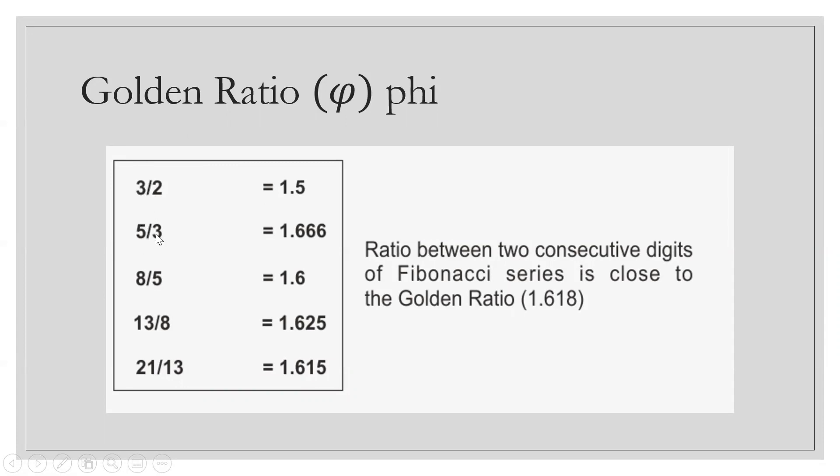The 5 is divided by 3. The 8 is divided by 5. The 13 is divided by 8. The 21 is divided by 13. So the ratio is close to 1.618.